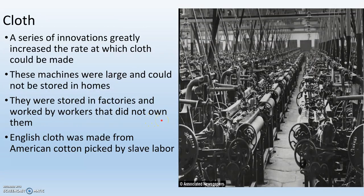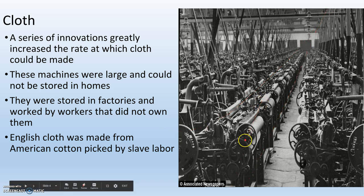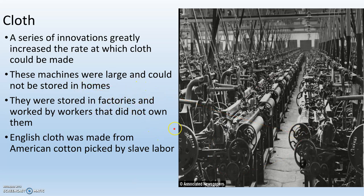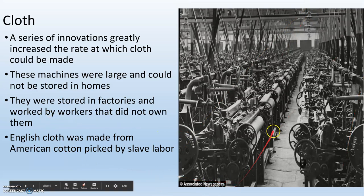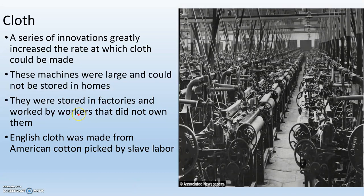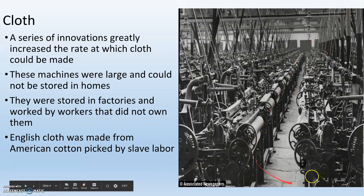The Agricultural Revolution created lots of people who needed clothes, so cloth is the first place the Industrial Revolution really starts. A series of innovations greatly increased the rate at which cloth could be made. Prior to the Industrial Revolution, clothes were made by hand — needle and thread in your home. That changes. Huge machines start making thread very inexpensively in huge quantities. Because these machines are so big they can't be stored in homes, so you get the first factories built, filled with machines and workers who don't own those machines. It's important to note that English cloth is made from American cotton picked by slave labor, so it is artificially cheap because of slavery. But even without slavery, English cloth is very inexpensive because of these huge machines.